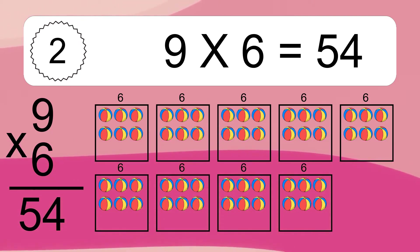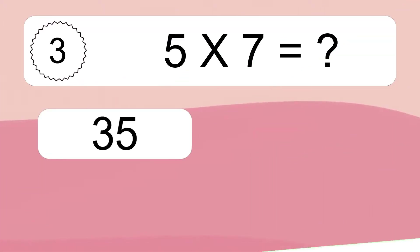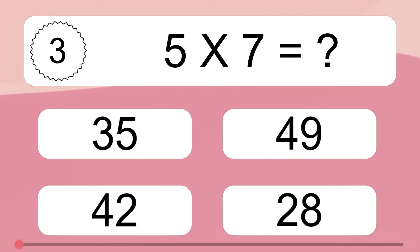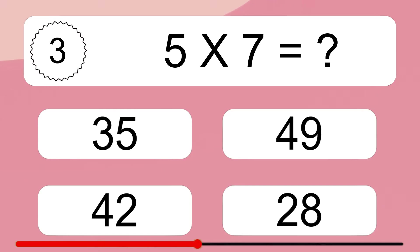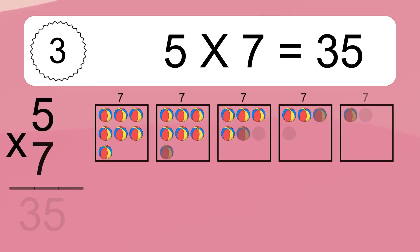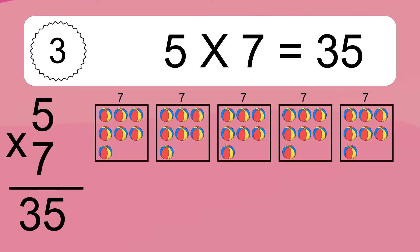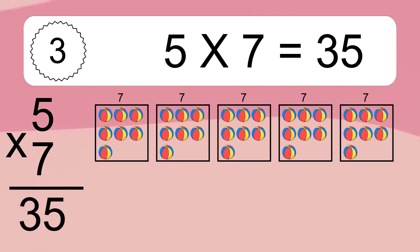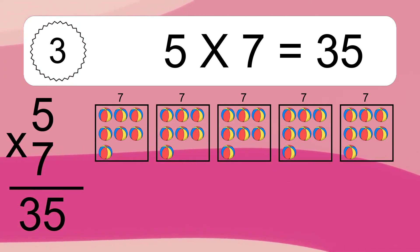This equals 54 balls. Five times seven equals what? Five times seven equals 35. We have five boxes, and each box has seven colorful balls inside. If you count all the balls in all the boxes together, you will have five times seven balls. This equals 35 balls.